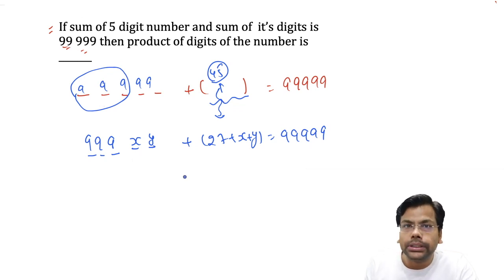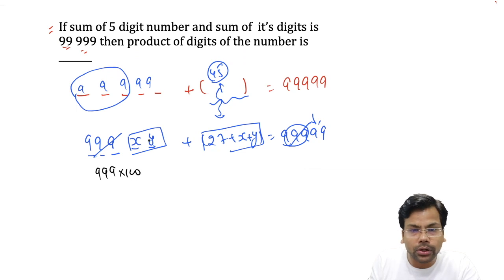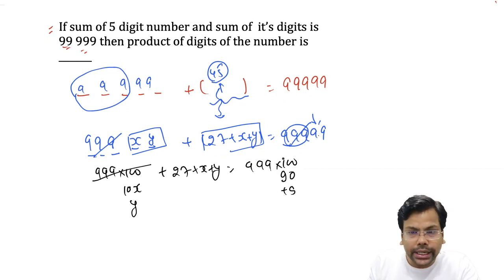Now, here we need to use the basic concept of the formation of numbers. Here is 9999, 9999 will definitely cancel out - 9 into 100, 9 into 100, 9 into 100. You will have x, y plus this value should be 99. We can write 99 into 100 because it is 100th place. I can write 10x and this is y. Plus here, you will see 27 plus x plus y. You can write these numbers as 999 into 100 and the 90 and 9.